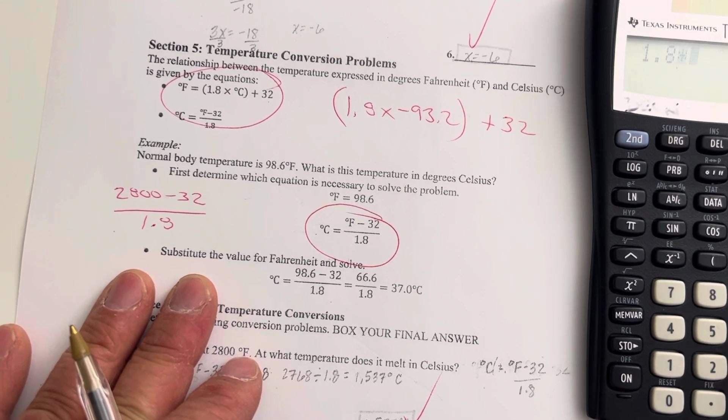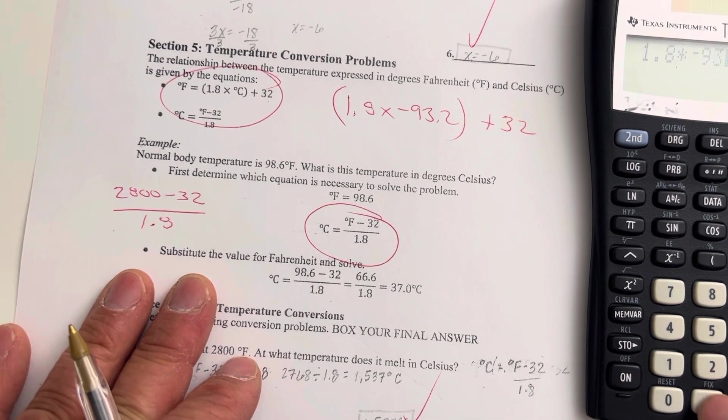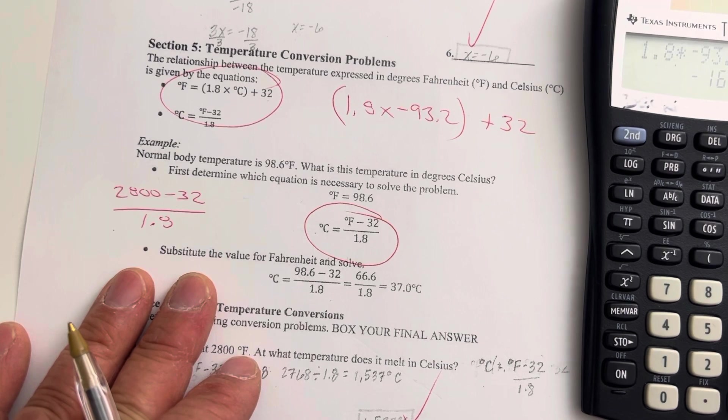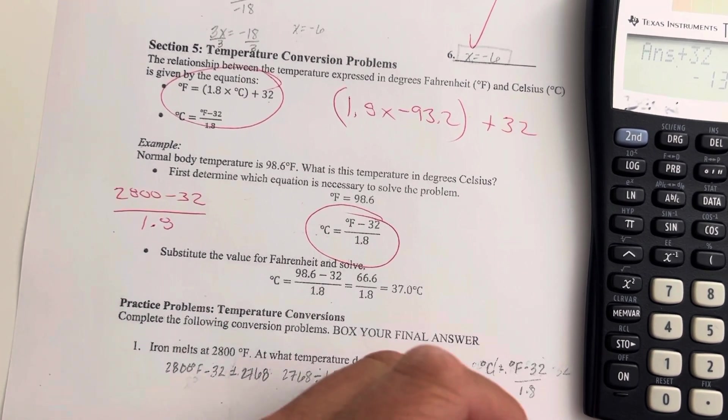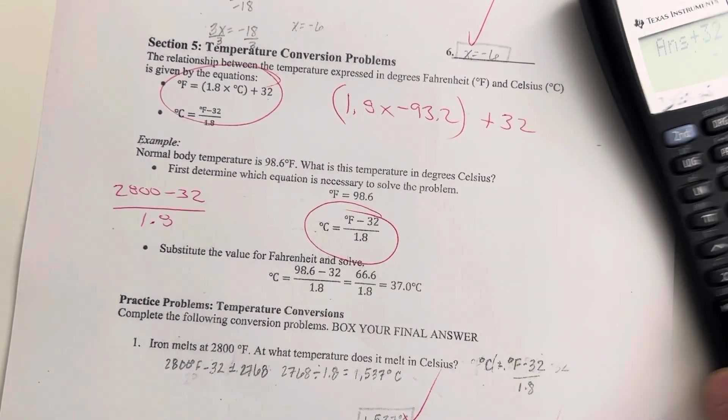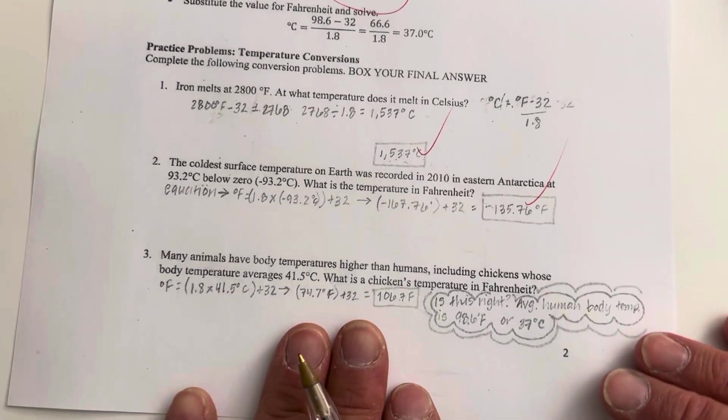So if we take our calculator, we get 1.8 times negative 93.2, and then we add 32 to that. And that gives us negative 135. So that looks reasonable. And then for the last one, I think that looks reasonable as well.